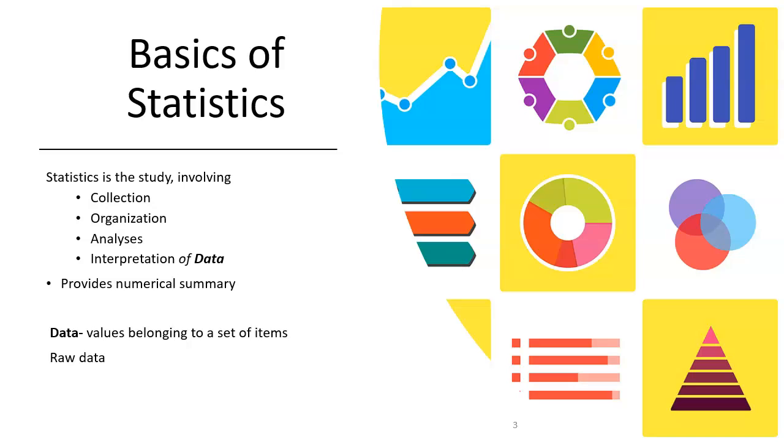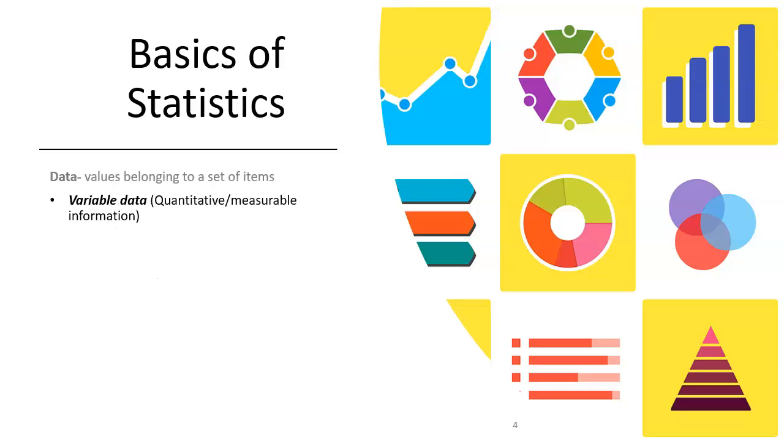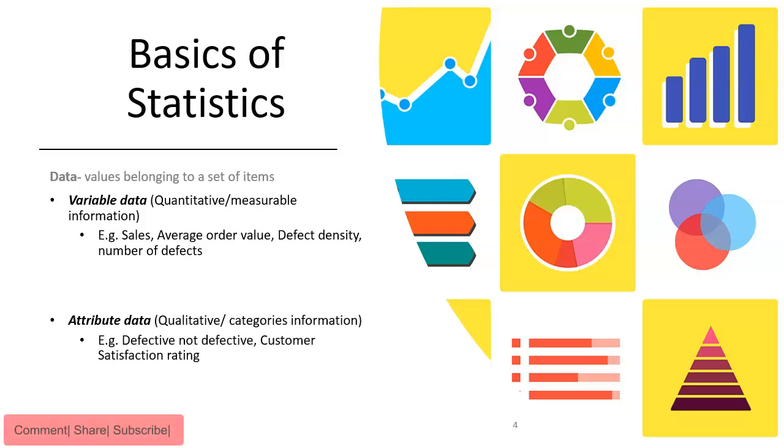There are two more terms: variable and attribute. The values of variable vary and are measurable, while attributes are the characteristics of an object. For example, variable can be in terms of number of defects, defect density, sales, average order value, etc., while attribute for a product can be defective and non-defective, good or bad, or the customer satisfaction ratings.